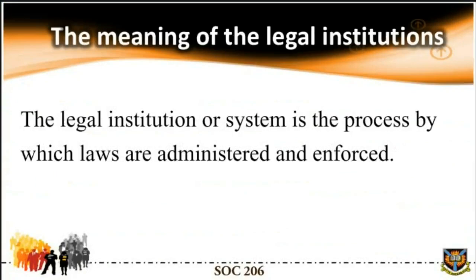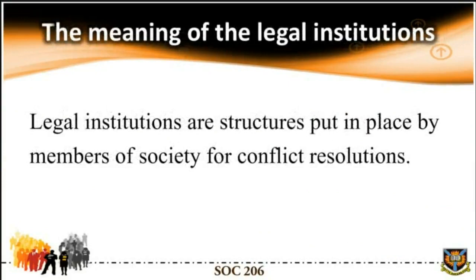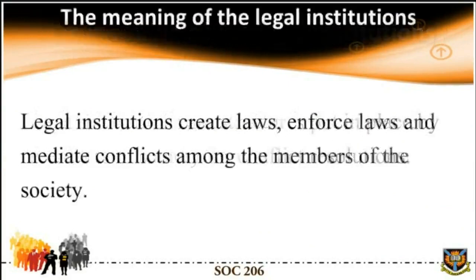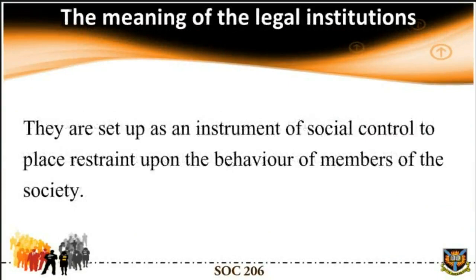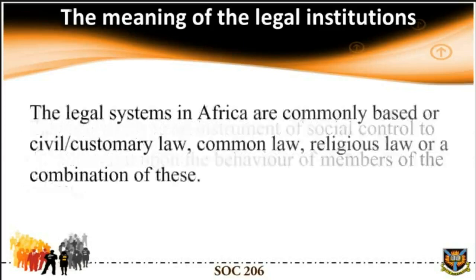The meaning of the legal institution: the legal institution or system is the process by which laws are administered and enforced. Legal institutions are structures put in place by members of the society for conflict resolution. Legal institutions create laws, enforce law, and mediate conflicts among the members of the society. They are set up as an instrument of social control to place restraint upon the behavior of members of the society.